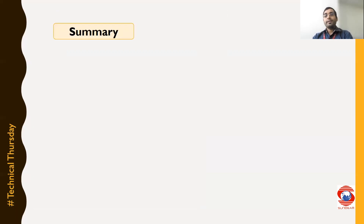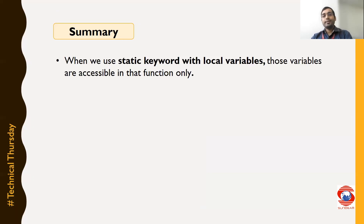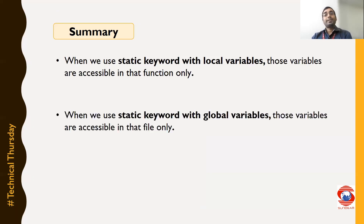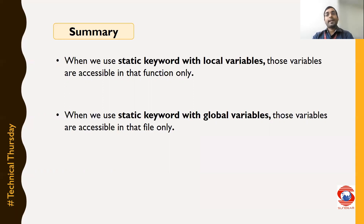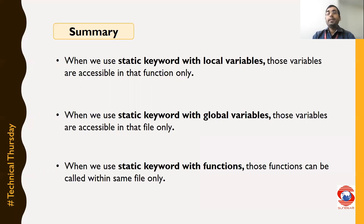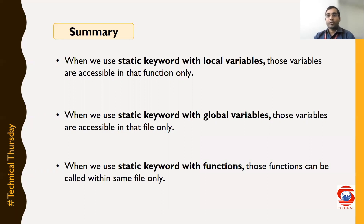Now let us talk about a few key points of the static keyword. When we use the static keyword with local variables, those variables are accessible into that function only. When we use the static keyword with global variables, those variables are accessible into that same file only and cannot be accessed in another file. When we use the static keyword with functions, those functions can be called within the same file only and cannot be called in another file. Thank you very much.